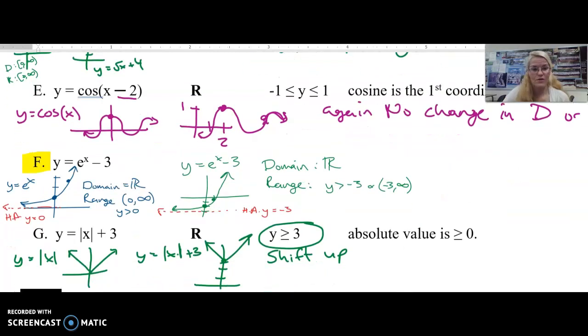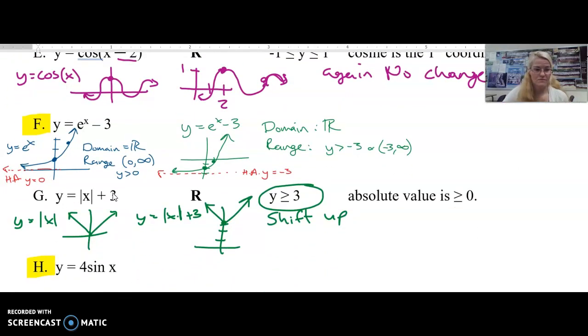And your absolute value function plus 3, what would you predict? Well, it's going to move it up 3. So what is the domain and range of this function? The domain is all real numbers. The range is y must be greater than or equal to 3. It's been shifted up.